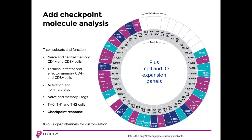The MaxPar Human T-cell Immuno-Oncology EX Panel Kit provides antibodies for eight key markers of checkpoint response. These include ICOS, CTLA-4, PD-1, TIM-3, LAG-3, 4-1BB, OX-40, and CD-95 FAS.